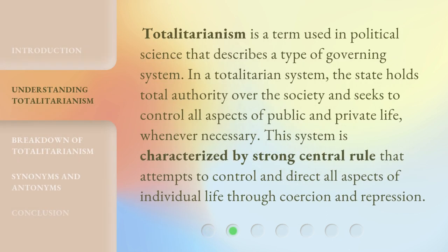Totalitarianism is a term used in political science that describes a type of governing system. In a totalitarian system, the state holds total authority over the society and seeks to control all aspects of public and private life whenever necessary. This system is characterized by strong central rule that attempts to control and direct all aspects of individual life through coercion and repression.